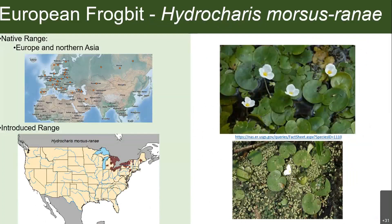I'm talking about European frogbit. This species is native to Europe and Northern Asia, but it was actually introduced into North America in the 1930s. It was first introduced into Canada, and then there's a secondary introduction in 1972 in Lake Superior, which was an accidental introduction. It was first reported in New York in 1974, and that Lake Superior introduction in the 70s definitely contributes to its pretty small distribution centered around the Great Lakes region.